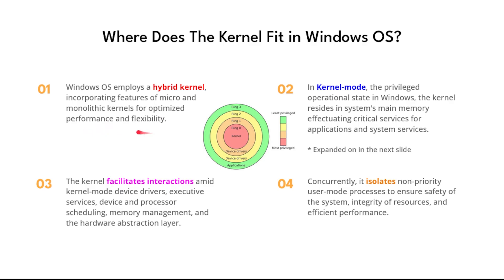The next thing I want to touch on is kernel mode. Kernel mode is the most privileged operational state in Windows. When we say privileged, we mean it has unrestricted access to all system resources, because the kernel manages those resources. If we're in kernel mode we have unrestricted access to all hardware resources, and later we'll expand on this — because in kernel mode we can access memory quite freely, which is where game hacking comes into play.